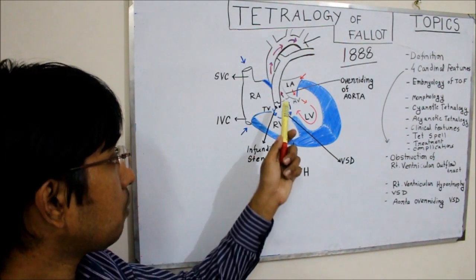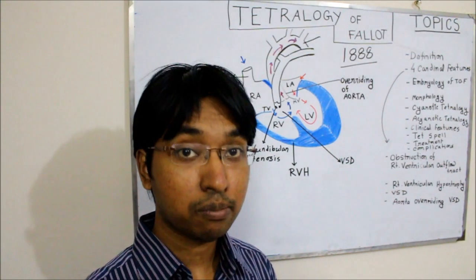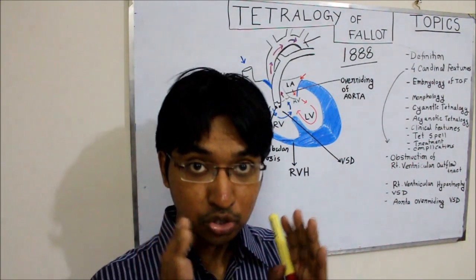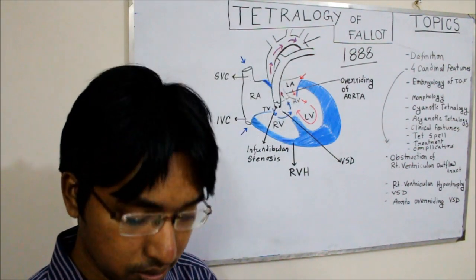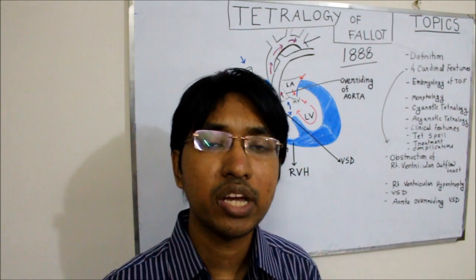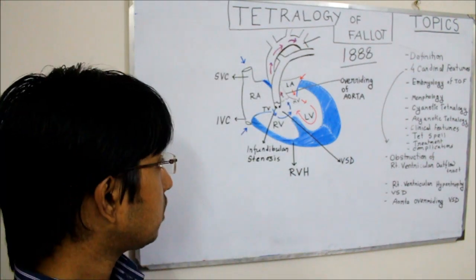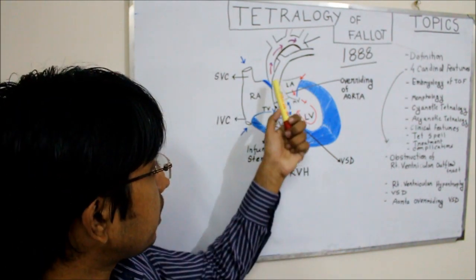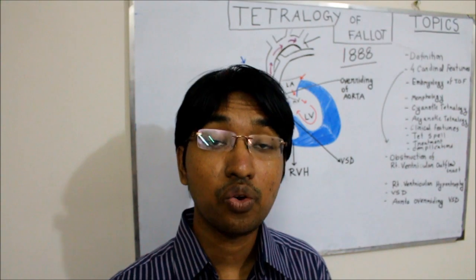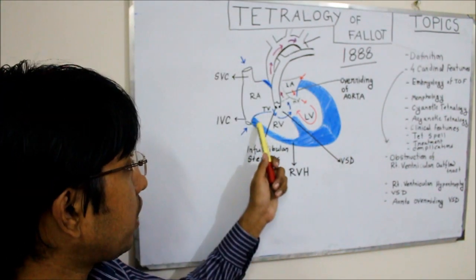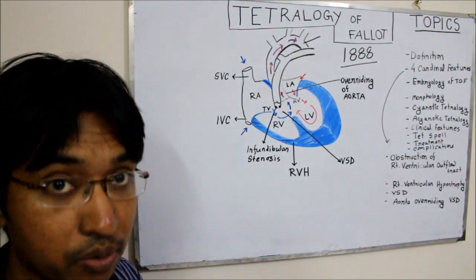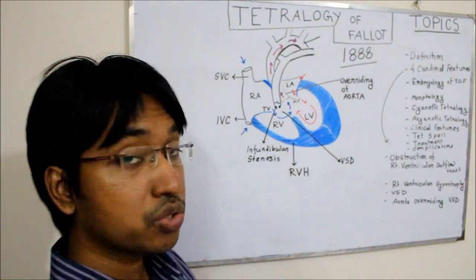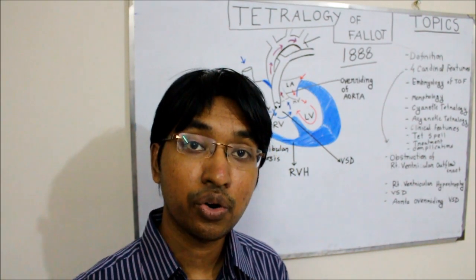Sometimes the problem may be sub-pulmonary stenosis—meaning the problem is not in the pulmonary valve itself but below it. There may be hypertrophy of the muscles below the pulmonary valve, also obstructing the right ventricular outflow tract. When there is obstruction of the right ventricular outflow tract, the right ventricle works hard to pump blood against that resistance, resulting in right ventricular hypertrophy—the muscles of the right ventricle become enlarged.